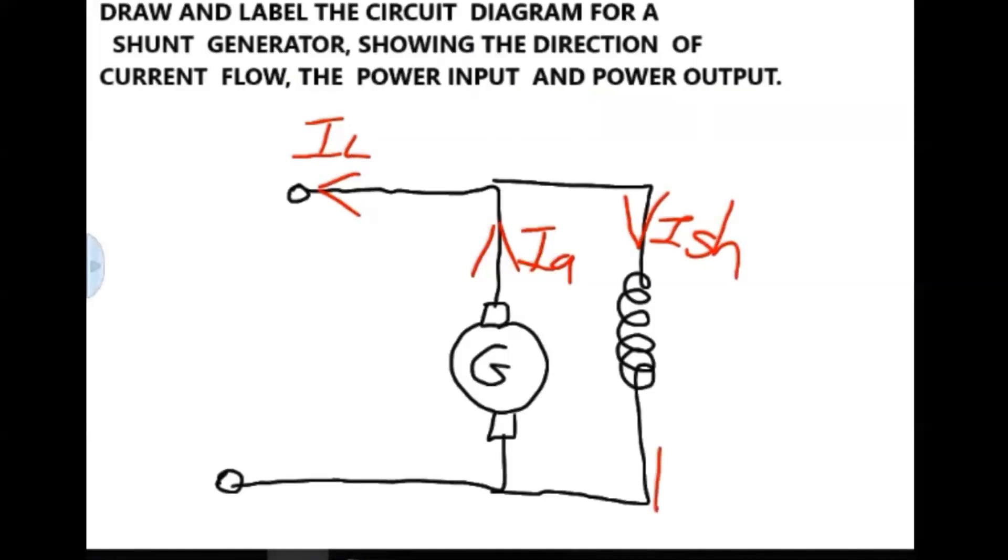For a shunt generator, we have a shunt winding called R shunt, and the resistance inside of the armature conductors is referred to as RA.